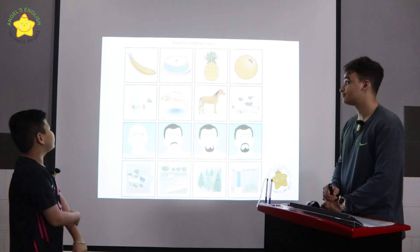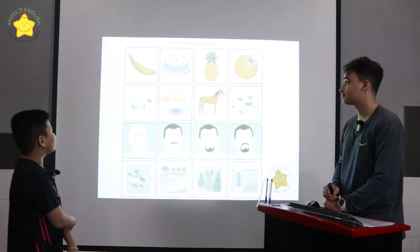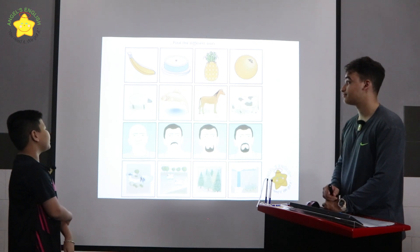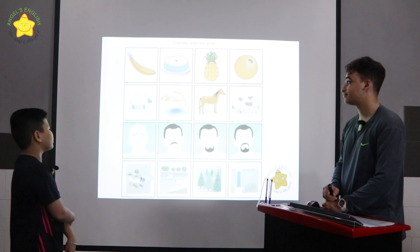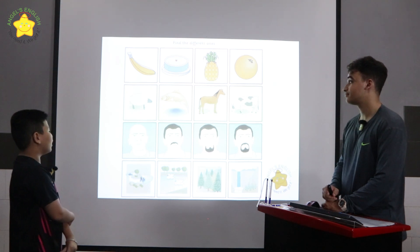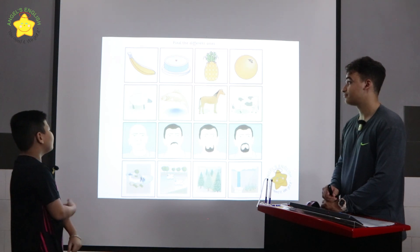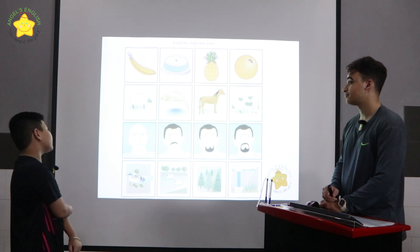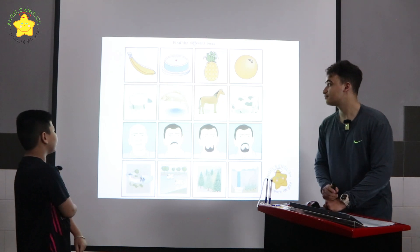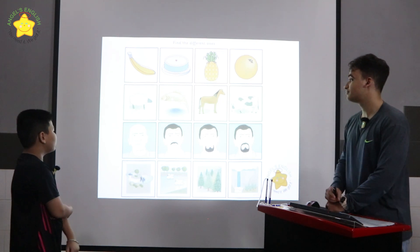The fish is different because the sheep, the horse, and the cow live on land.